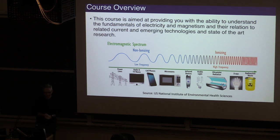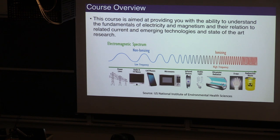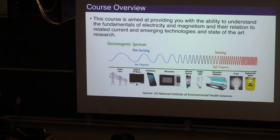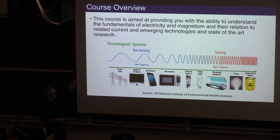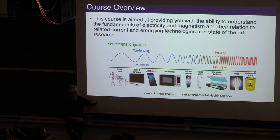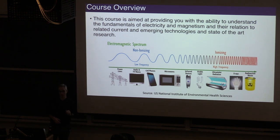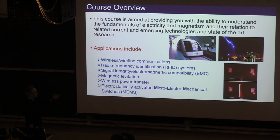The course aims to give you the ability to understand the fundamentals of electricity and magnetism. My goal is to provide the background so you can understand applications and technologies taking place right now. Here you see a graph from the National Institute of Environmental Health Sciences showing things along the electromagnetic spectrum — from power lines at low frequency, to radio waves, cell phones, ultraviolet radiation, X-rays, and radioactive sources. We will focus on the low-frequency spectrum and move toward high frequencies by the end.